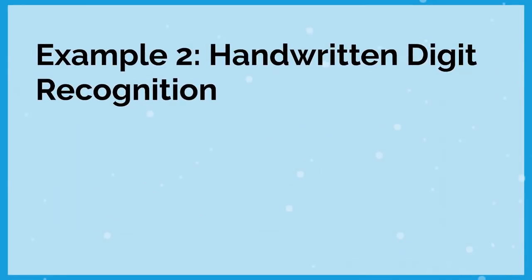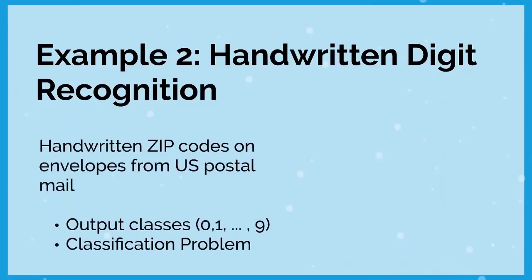Example two: handwritten digit recognition. In this example, zip codes were written on envelopes from the U.S. Postal Service, and they wanted to automatically read these zip codes. However, a lot of people have very bad handwriting, which makes these things difficult to read. For this problem, you have ten output classes — zero to nine. So we can have more than two output classes, and any number of inputs and outputs in these problems.